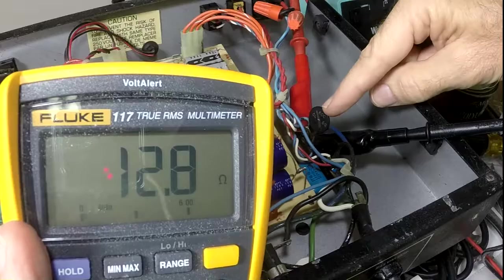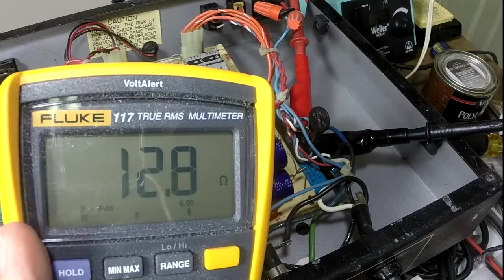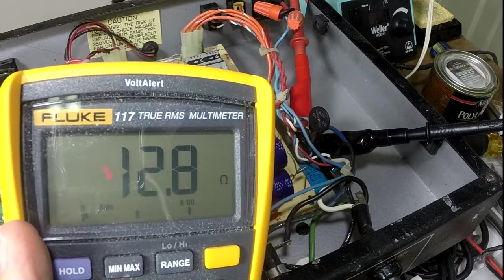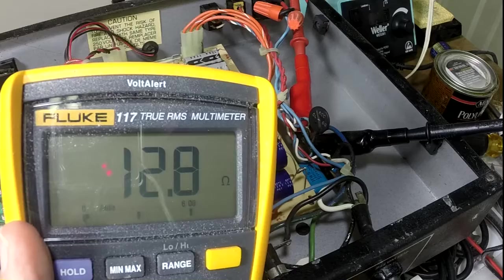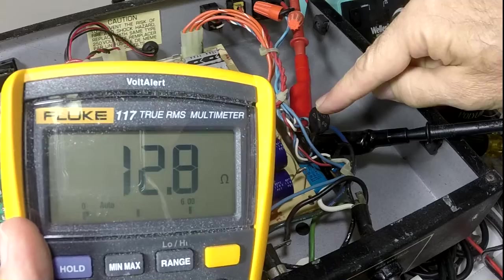A way to take care of that is to use this thermistor. When the unit is turned on, it limits the current until it warms up, and when it warms up, the resistance decreases, and then everything stabilizes and the amp continues to work.